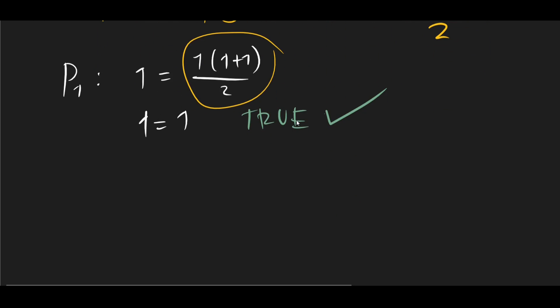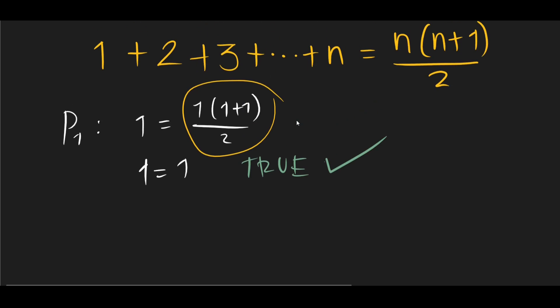Now, what do we do next? The second condition: if we assume that Pk is true, and if we can show that Pk plus 1 is also true, then we have proven this statement.